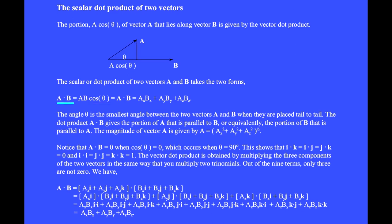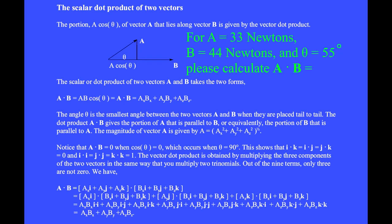This gives the portion of the vector A that lies along B, or equivalently the portion of vector B that lies along A. For A equal to 33 newtons, the magnitude of B equal to 44 newtons, and the angle between them equal to 55 degrees, the dot product A dot B equals 830 newtons squared.